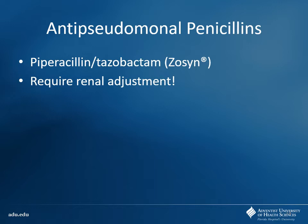From an antipseudomonal standpoint, piperacillin-tazobactam — Zosyn — is going to be your go-to with this one. Good coverage here. The nice thing about Zosyn — what else does it cover? Anaerobes. So if you're worried about having a true anaerobic aspiration pneumonia, that could help cover that as well. Ampicillin-sulbactam will cover that also, however ampicillin-sulbactam does not cover pseudomonas. So piperacillin-tazobactam is the only real antipseudomonal penicillin we have.